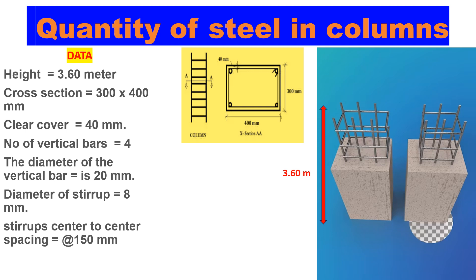Our column has a height of 3.6 meters. The cross-section is 300 by 400 millimeters, and we have a clear cover of 40 millimeters. The number of vertical bars is four, with a diameter of 20 millimeters. The diameter of the stirrups is 8 millimeters, and the stirrups are spaced at 150 millimeters center to center.